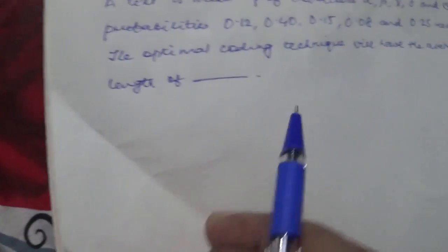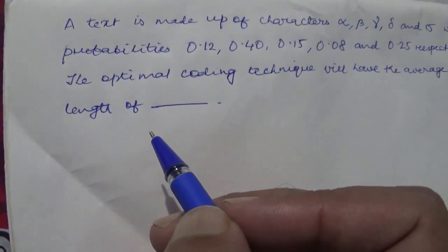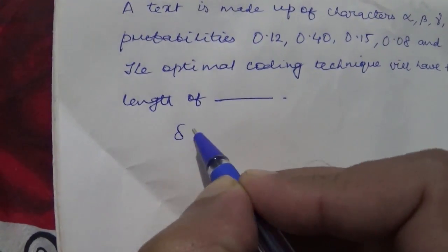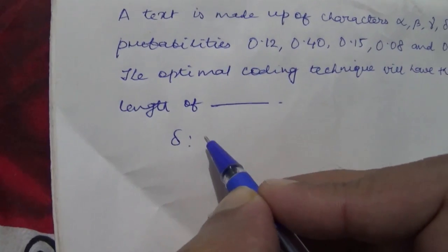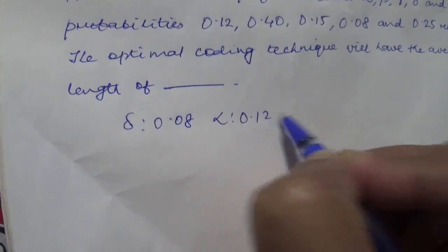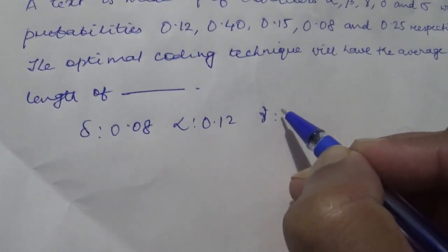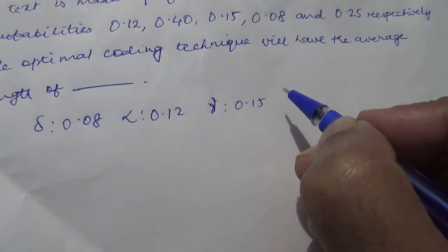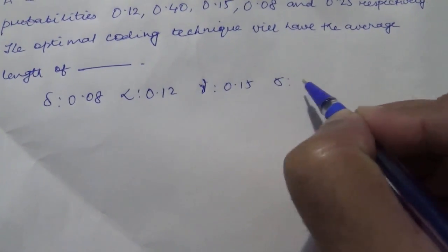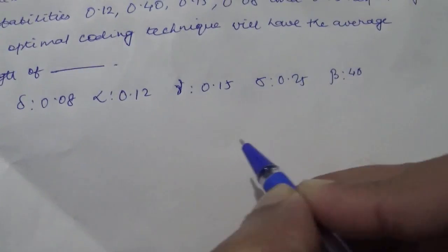We arrange the elements in ascending order according to their probabilities. So here we have delta with 0.08, then alpha with 0.12, then gamma with 0.15, then sigma with 0.25, and beta with the highest value of 0.40.